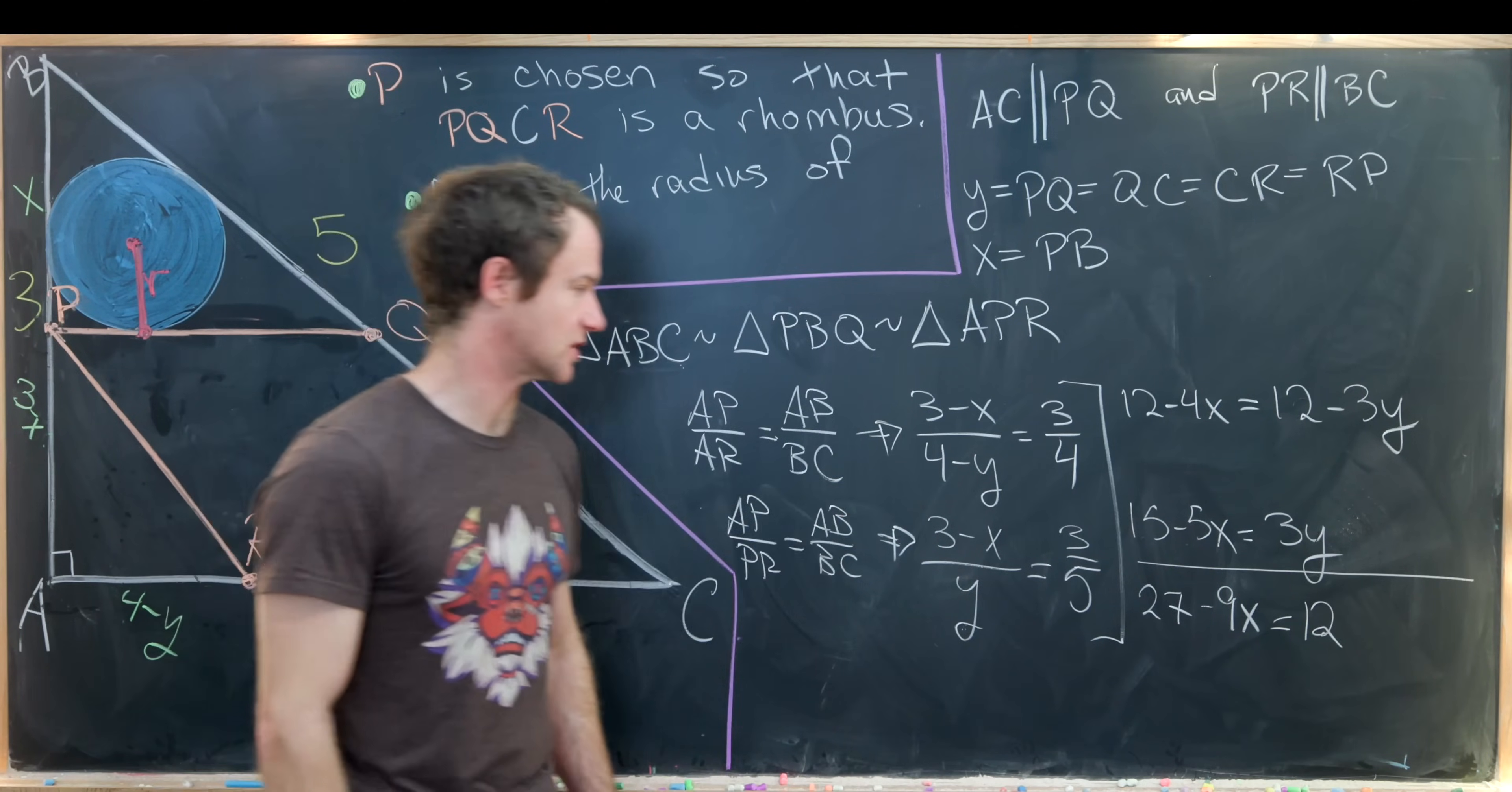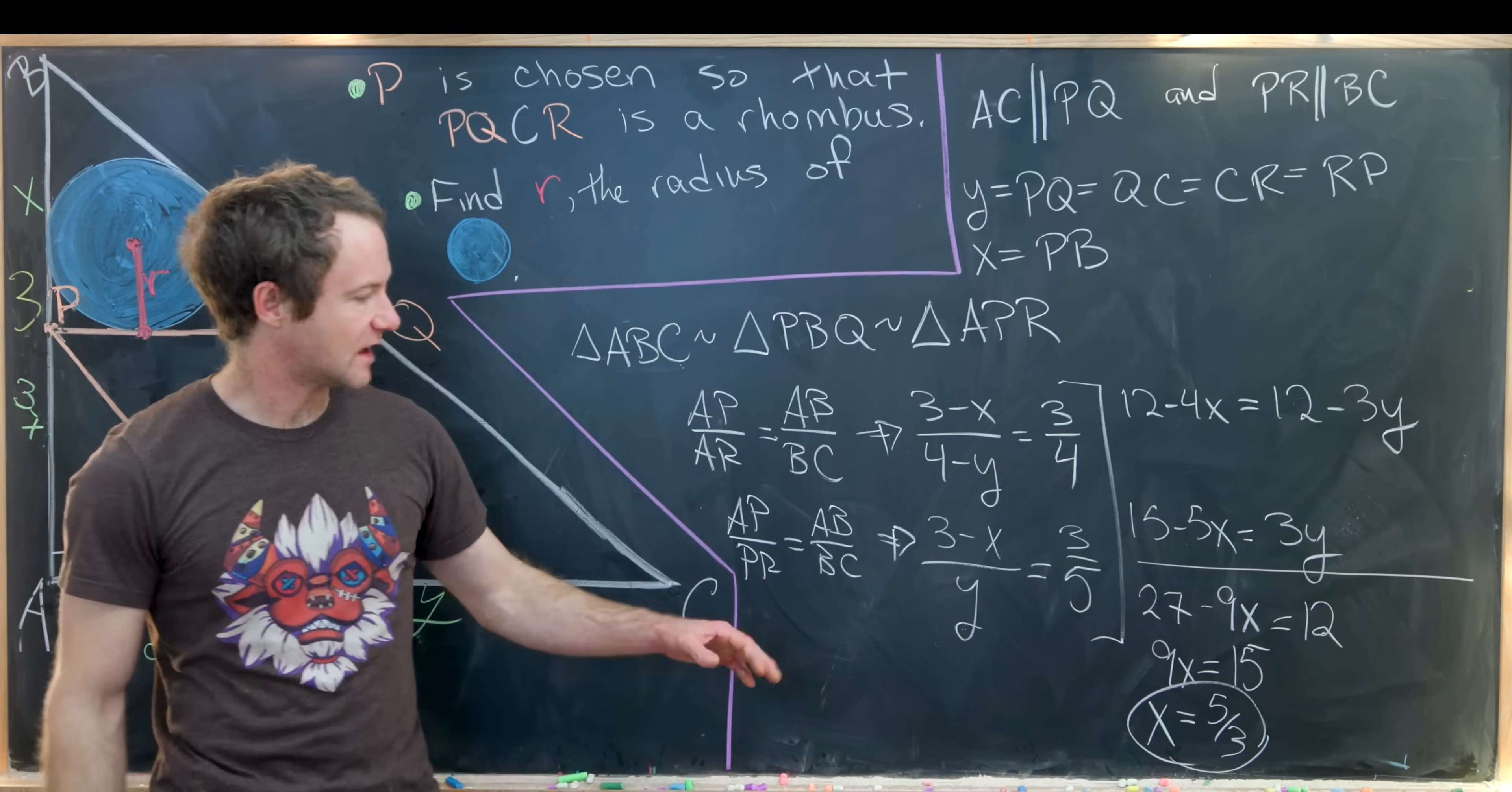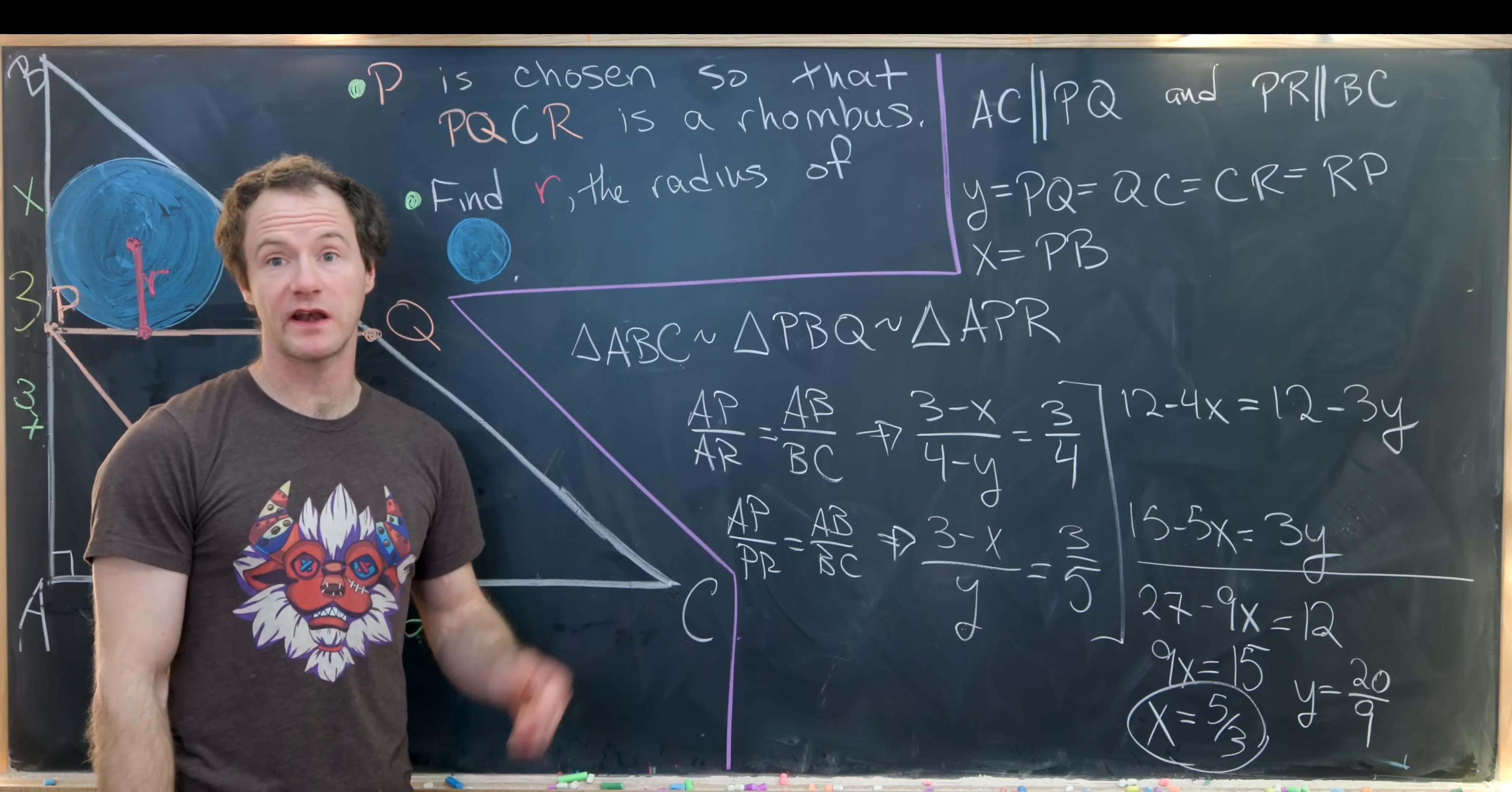So that's starting to look good. That means we have 9X is the same thing as 27 minus 12, which is 15. We can divide both sides by 9 and simplify the fraction and we'll get that X is 5 thirds. Then we can take this value of X and plug it in anywhere that we want here and solve for Y. What you end up with is Y is 20 over 9. So now we have our values of X and Y and we're ready to move on to the next step.